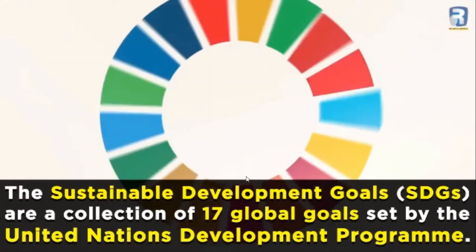Sustainable Development Goals — let me give you a brief introduction about SDGs. There are 17 goals in number, which are followed by 169 targets. How did these goals emerge? In 2015, all the leaders of the world and their governments had a mutual discourse and decided to transform the MDGs — Millennium Development Goals — into SDGs, which is Sustainable Development Goals.